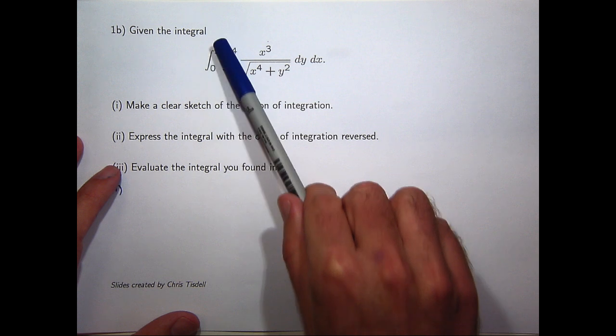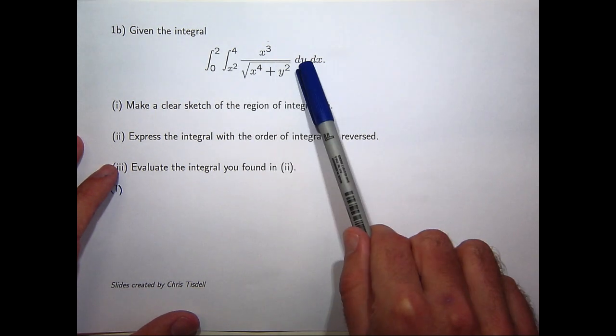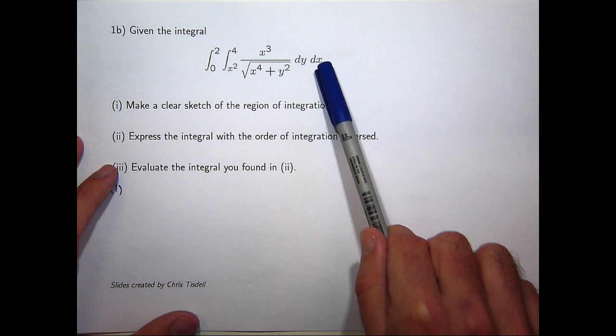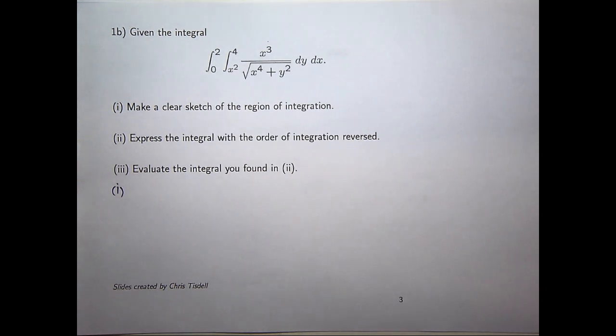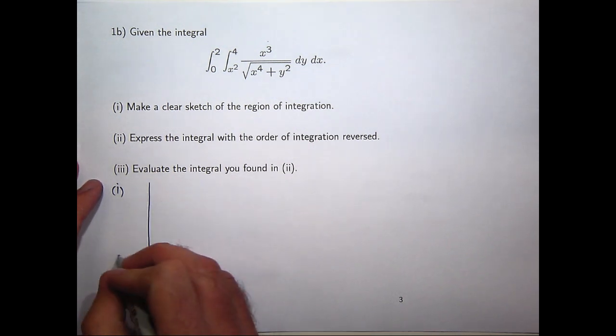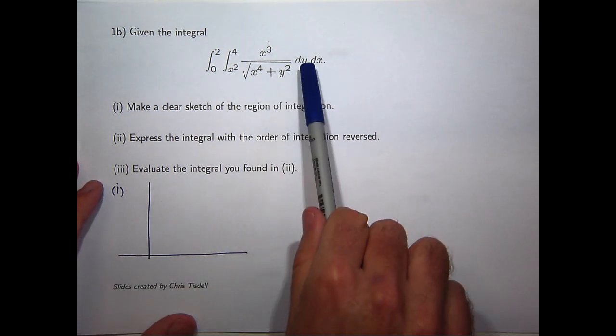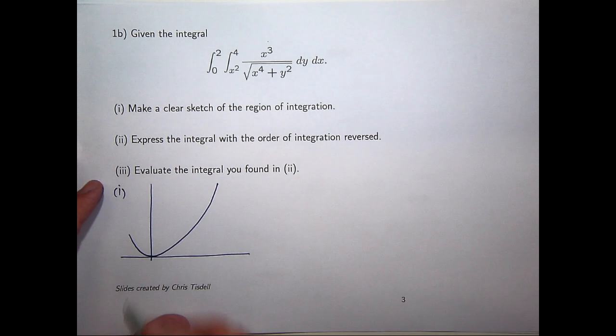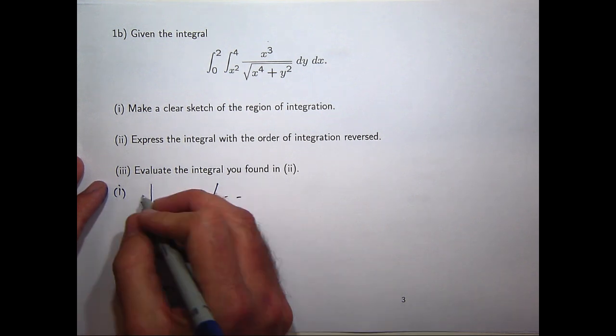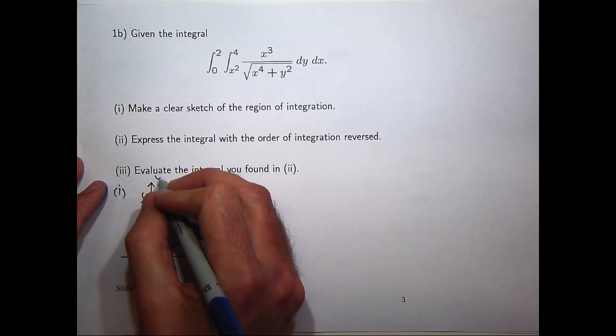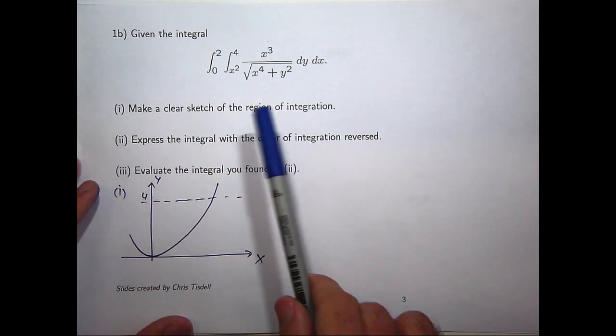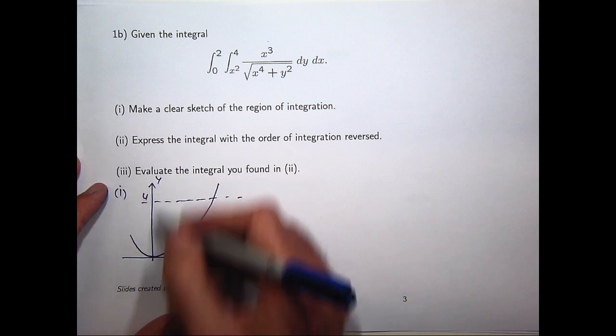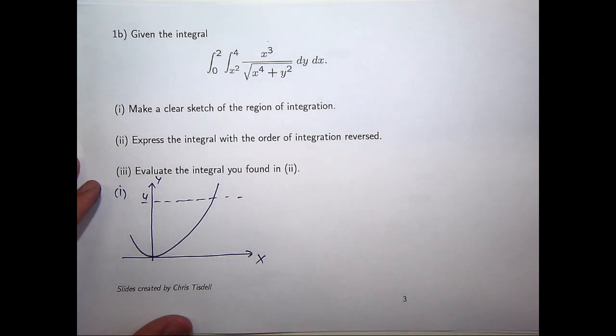All right, so our bounding functions are y equals x squared, y equals 4, x equals 0, and x equals 2. So a good place to start with these problems is draw in the bounding curves. OK, draw in y equals x squared. Draw in y equals 4. Draw in x equals 0, that's just the y-axis, and draw in the line x equals 2.